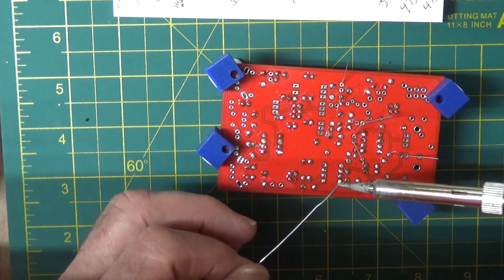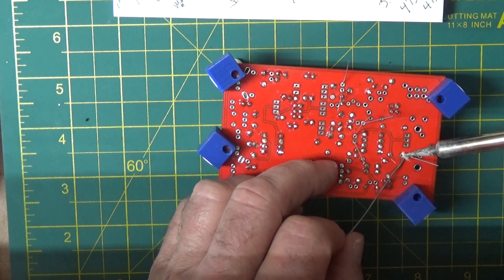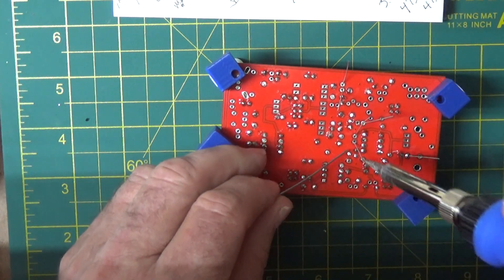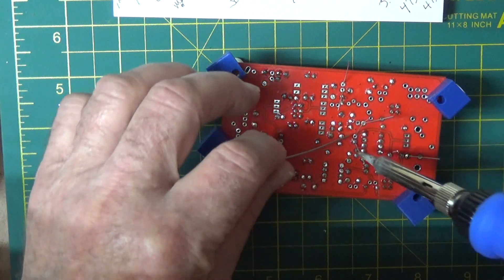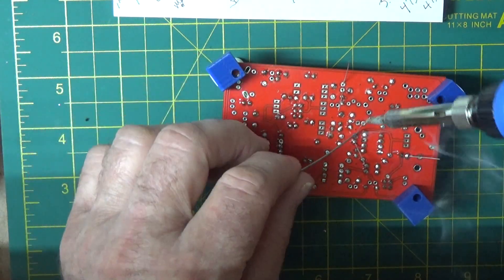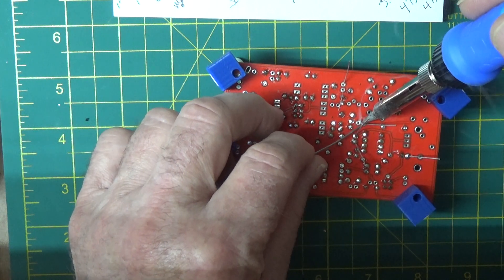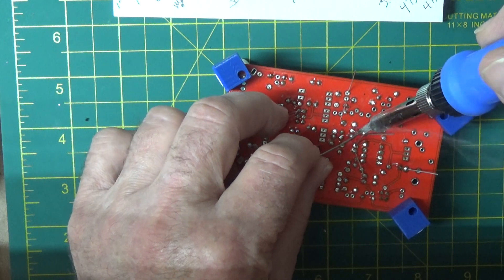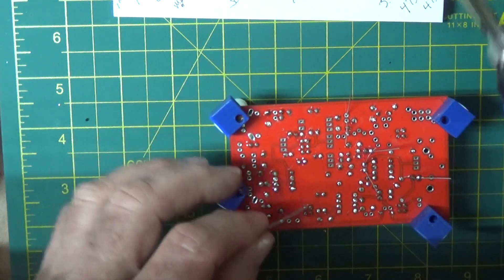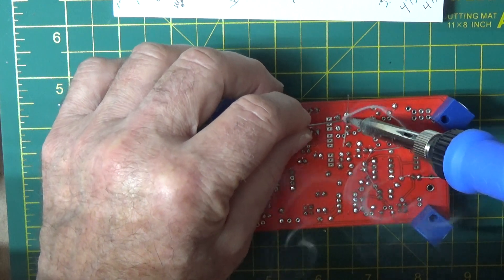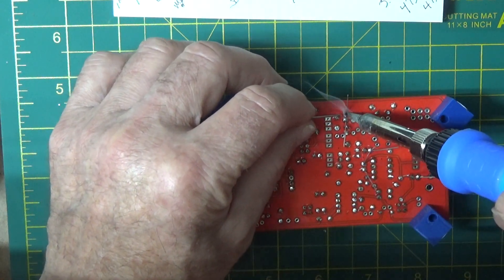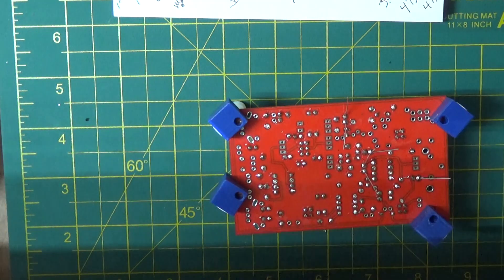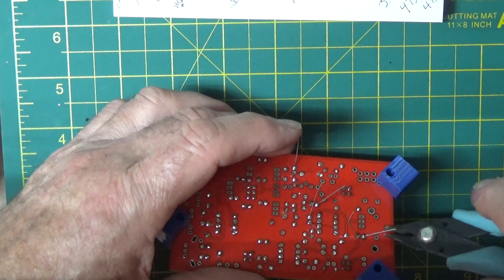We're going to solder them in. Clean. Dab. Solder. Clean. Dab. Solder. Cut those leads off. We're running out of parts.